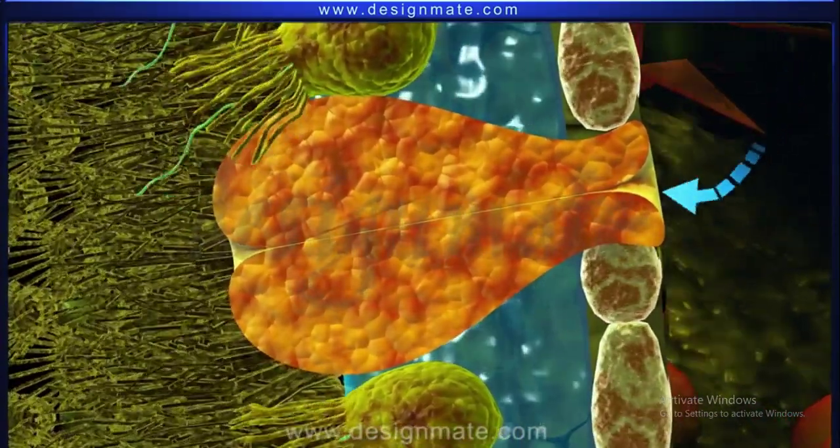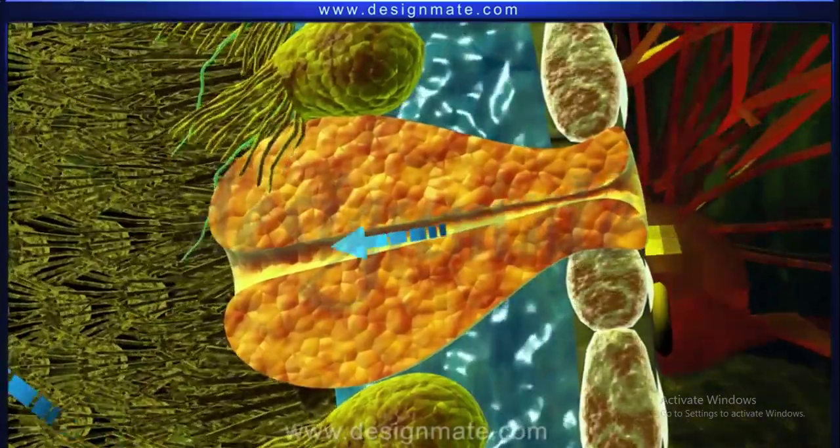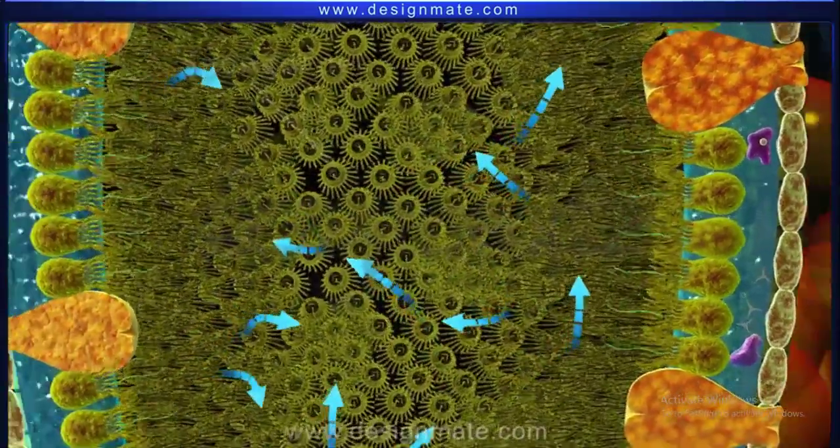An internal view of the sponge shows that water flows through the Ostia directly into an open space called the Spongocoel.